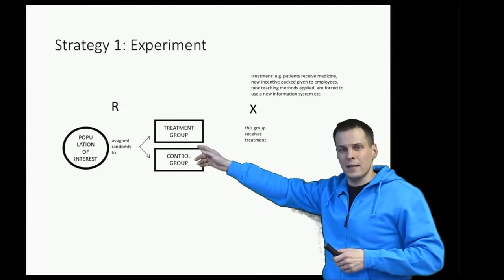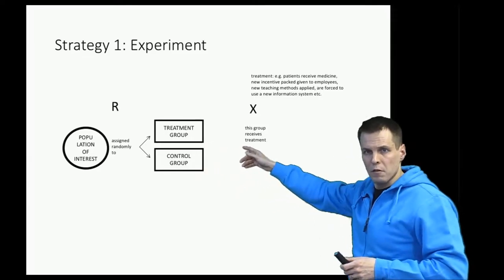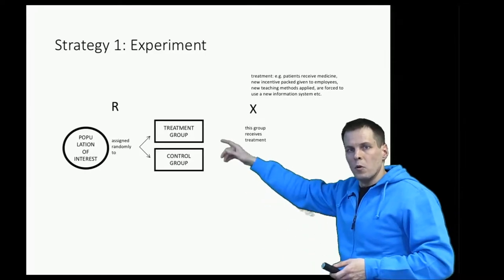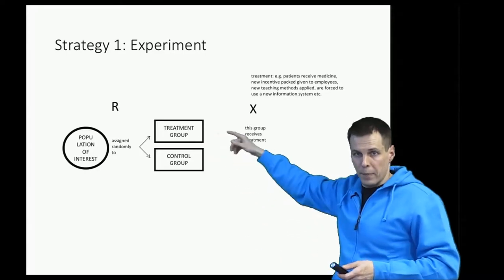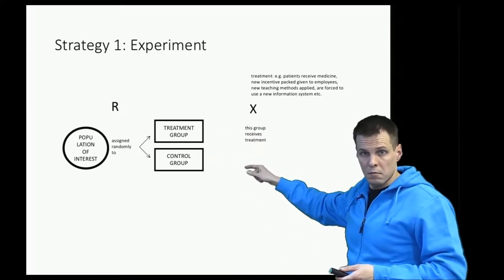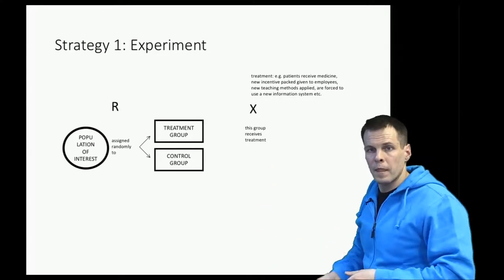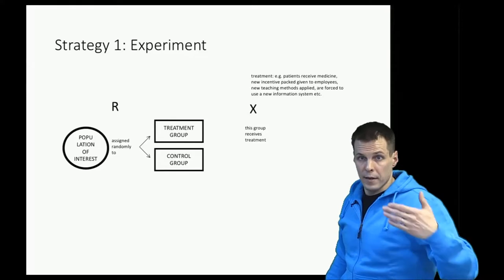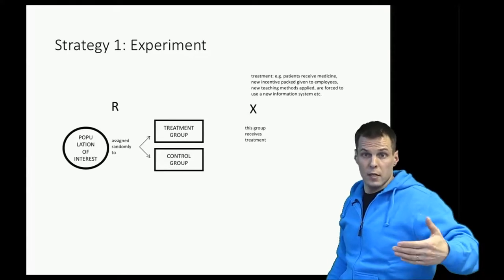Typically the example is from medical research, so this is applied in medicine and it's easy to understand. So one group receives a pill, the other one doesn't. Then after, let's say two days, we assume that the effect takes two days to be realized.